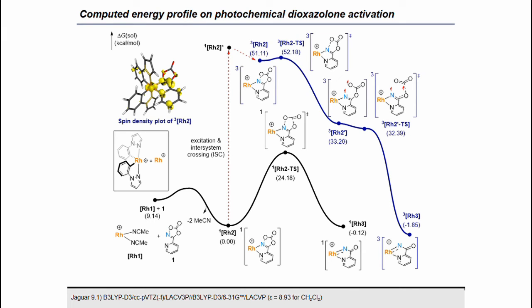Through analyzing the photochemical properties of the newly designed rhodium dioxazolone complex, we next conducted a DFT calculation on the potential activation pathway. After ligand coordination, the CO2 liberation barrier on the singlet reaction pathway is 24 kcal/mol to form the postulated singlet nitranoid species Rh-3. Interestingly, once Rh-2 is excited into its triplet state at 51 kcal/mol, the stepwise N–O bond cleavage and C–O bond cleavage steps become nearly barrierless to form a triplet nitranoid intermediate. The estimated energy difference between the singlet and triplet nitranoid species is only 1.7 kcal/mol.